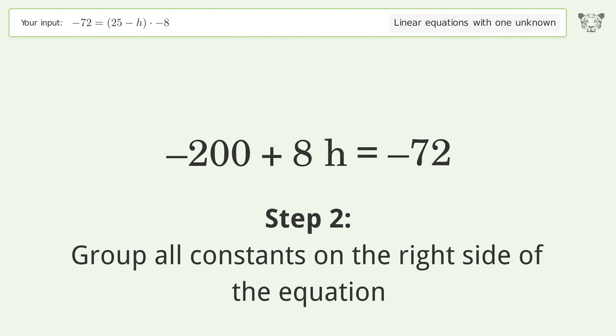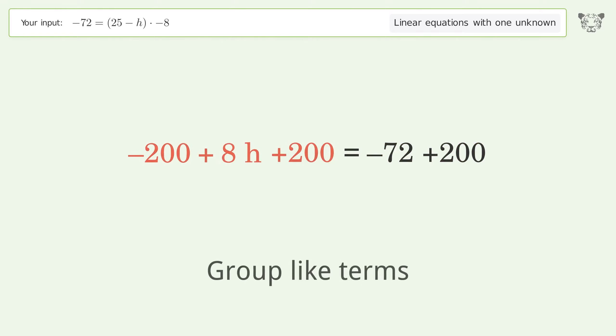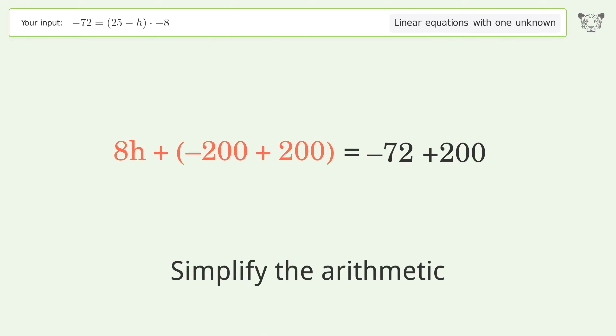Group all constants on the right side of the equation. Add 200 to both sides. Group like terms and simplify the arithmetic.